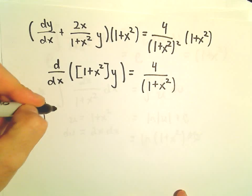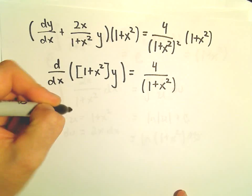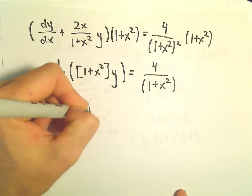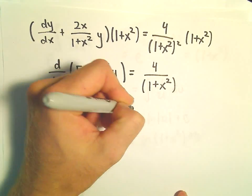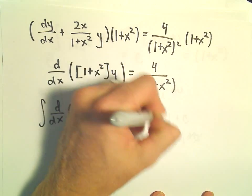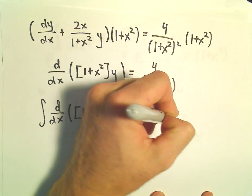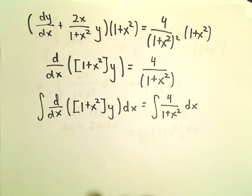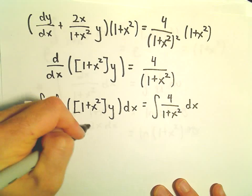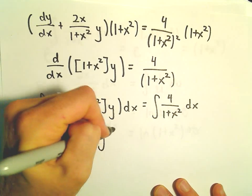And again, what we're going to do is just integrate simply both sides with respect to x. Alright, so again, on the left side, we'll just be left with 1 plus x squared times y.